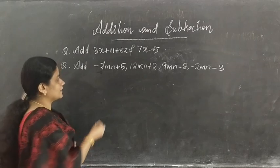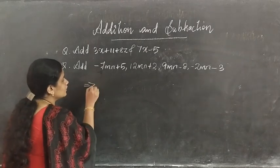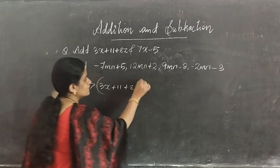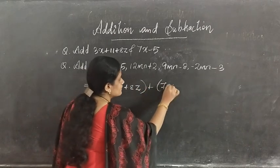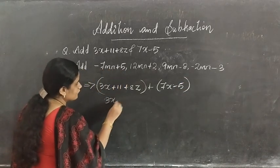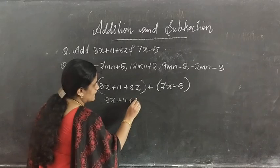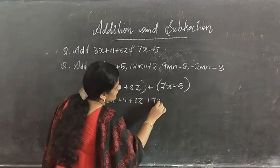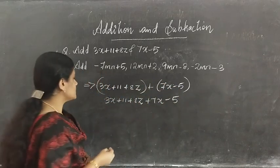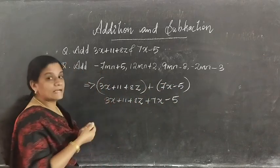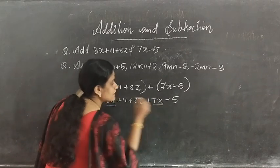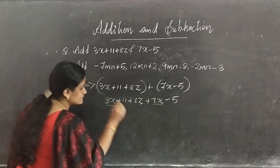Here we have to add these expressions. We write 3x plus 11 plus 8z, plus 7x minus 5. Opening the bracket: 3x plus 11 plus 8z plus 7x minus 5. We add the like terms: 3x plus 7x gives 10x.